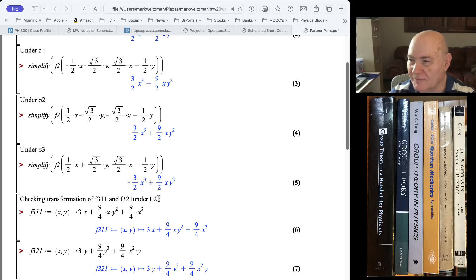Which is what it's supposed to, because remember this gamma two, one, one, one for rotations and the identity element, but minus one, minus one, minus one for rotations. And then under sigma three, same thing.